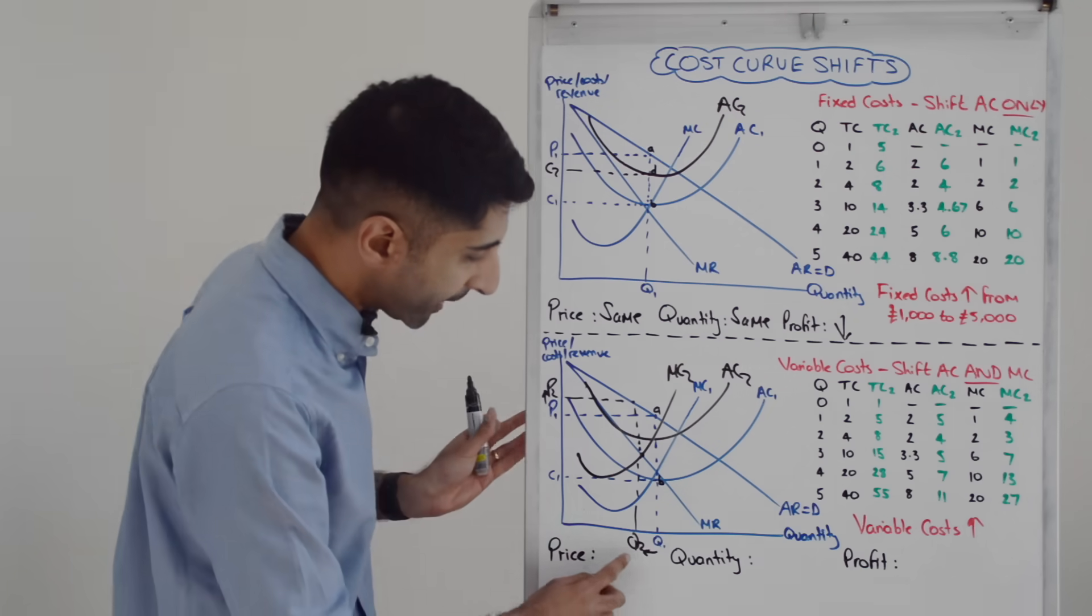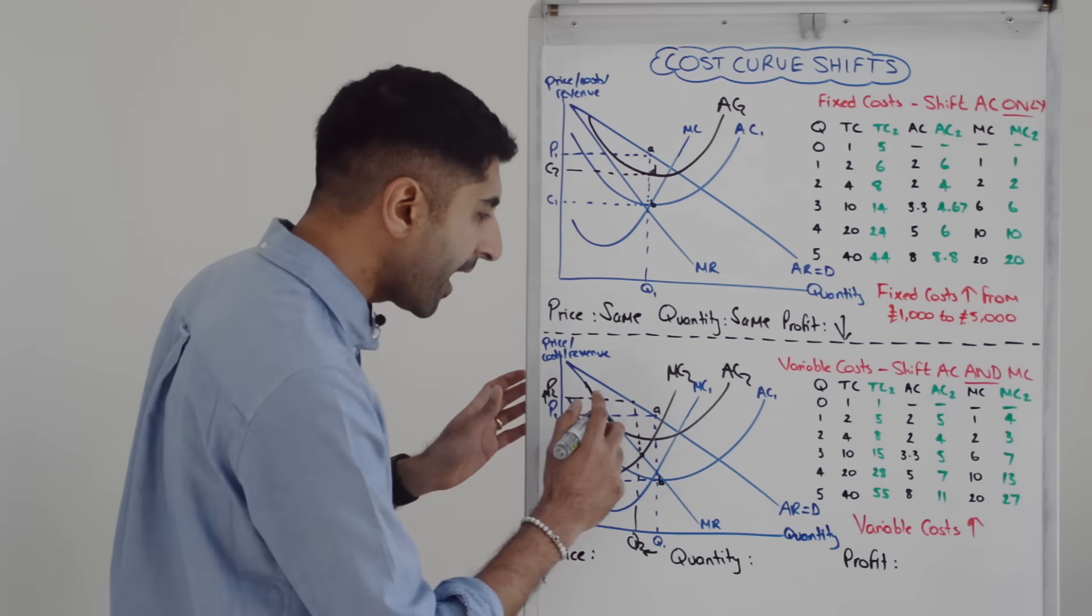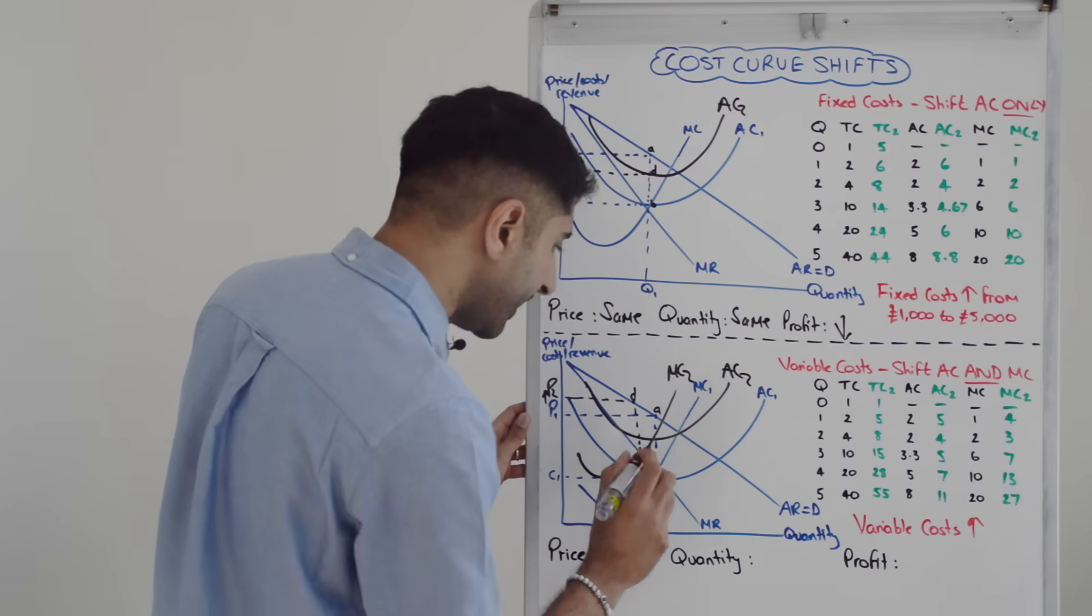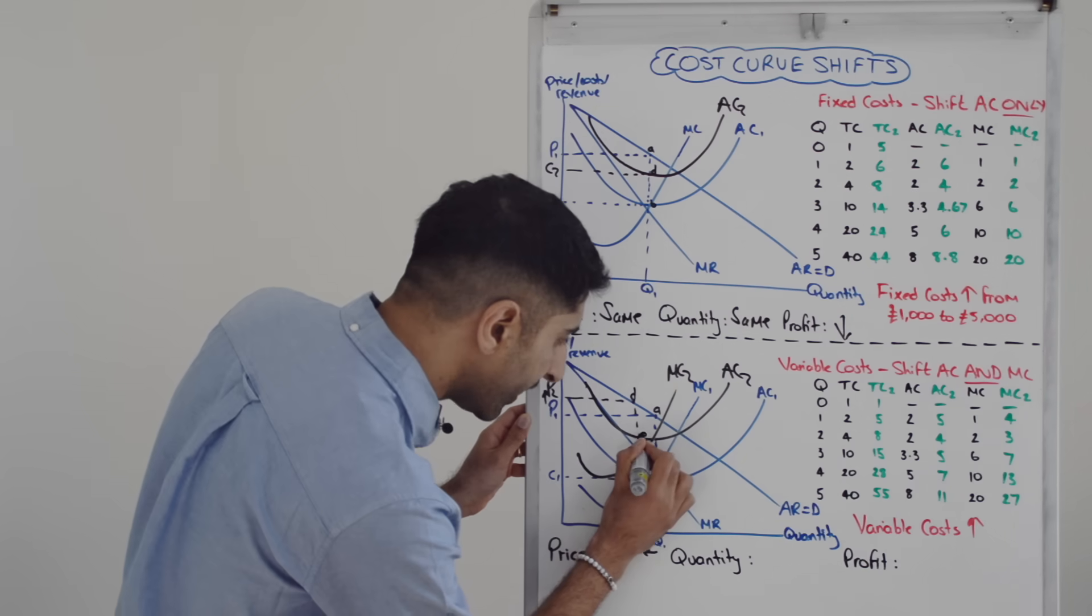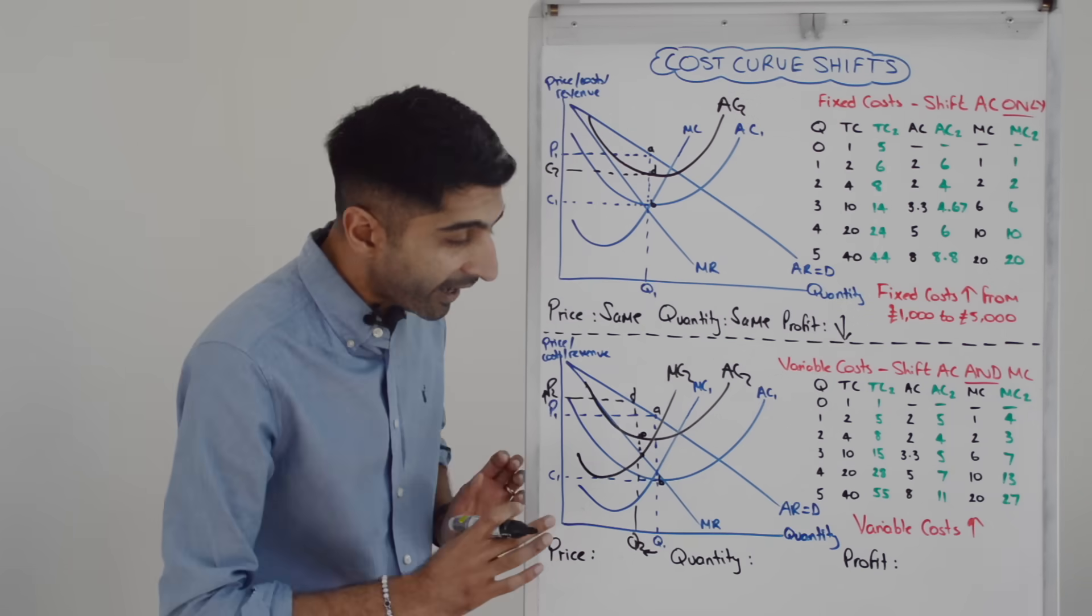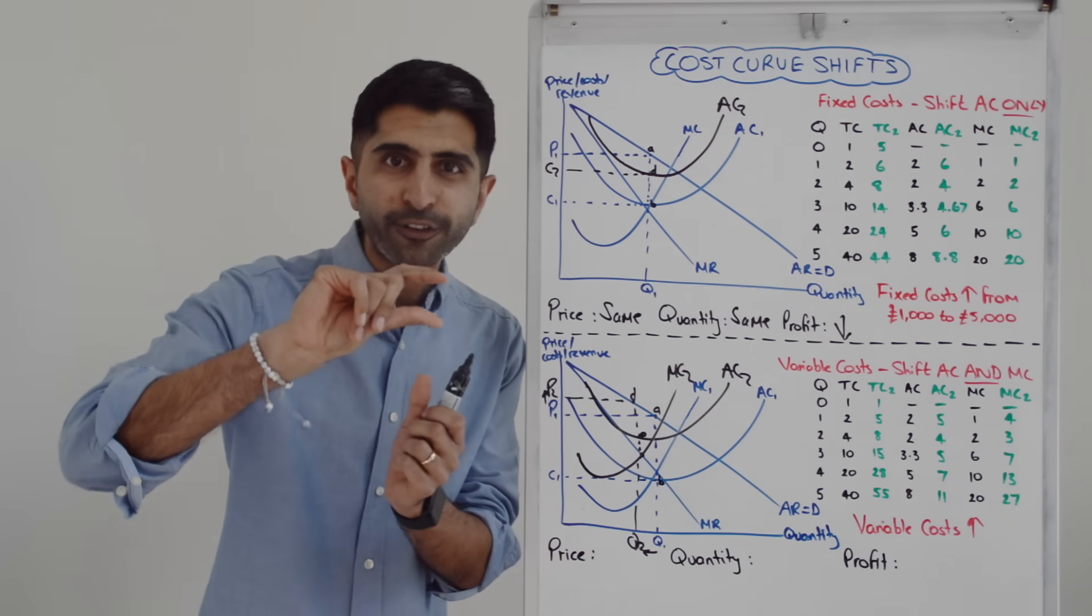But now we can see at the profit max quantity of Q2, AR is over here. Let's call that D. Whereas AC is over here. So D is AR, E is AC. AR is still greater than AC. So there is still supernormal profit being made per unit of the difference between D and E.